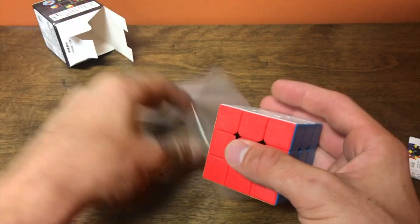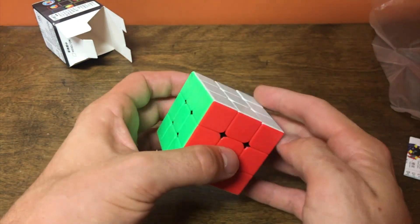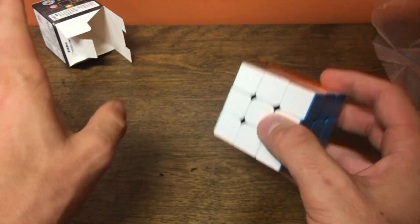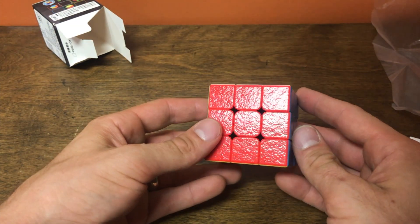First thing is it has colored tiles. What is that? When Moyu and Qiyi said they had frosted plastic, this is frosted plastic. What they have is just unpolished.